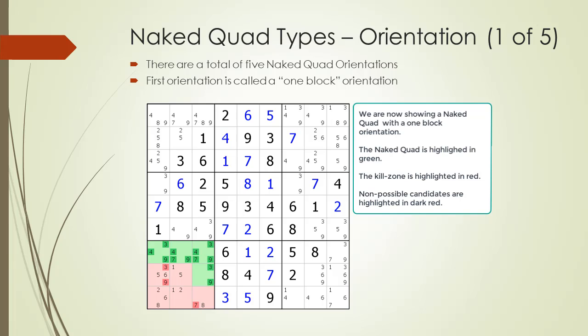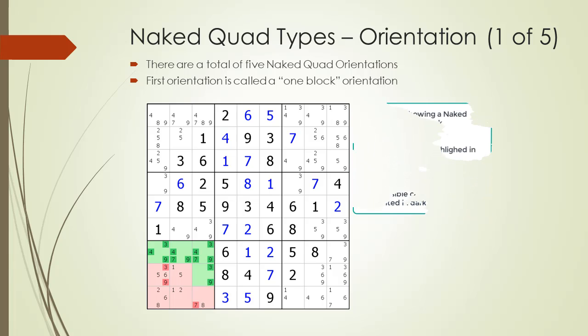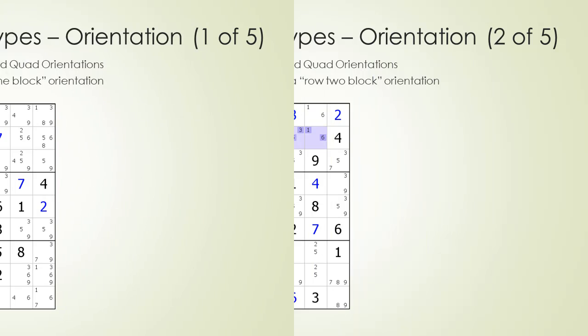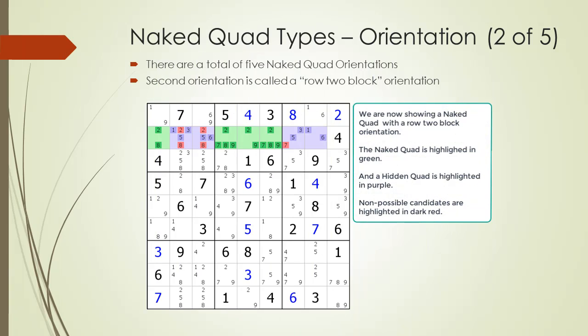In this example, we have a naked quad highlighted in green and the kill zone highlighted in red. The non-possible candidates are highlighted in dark red. The second orientation is when we have a naked quad in a row, but sharing some of the cells with 2 different blocks as shown.